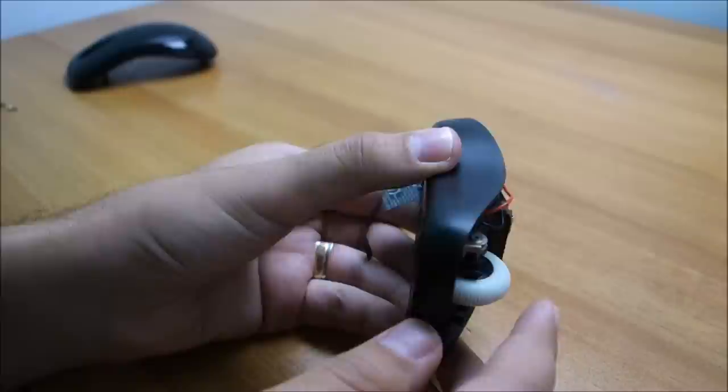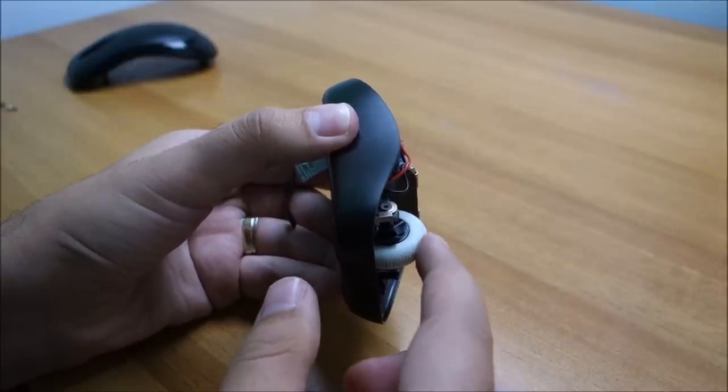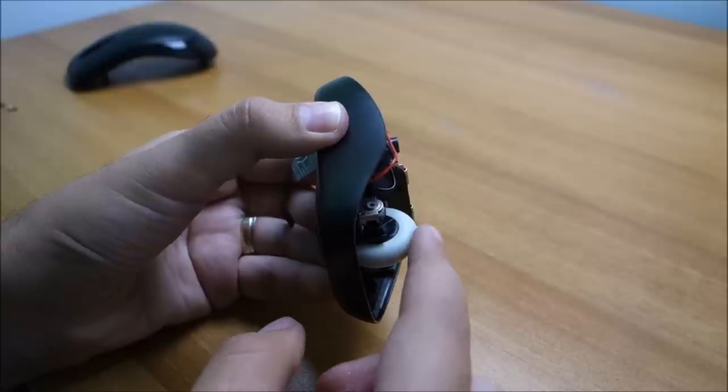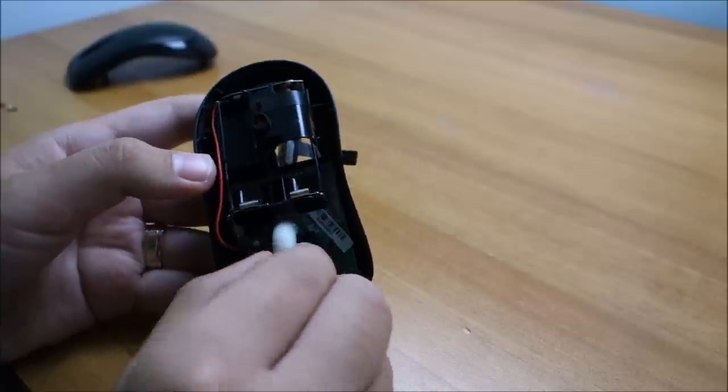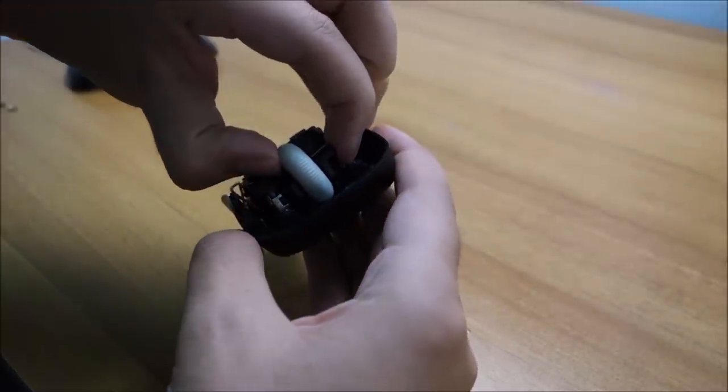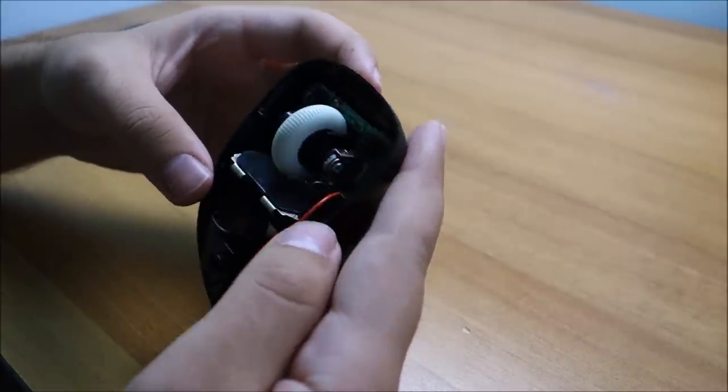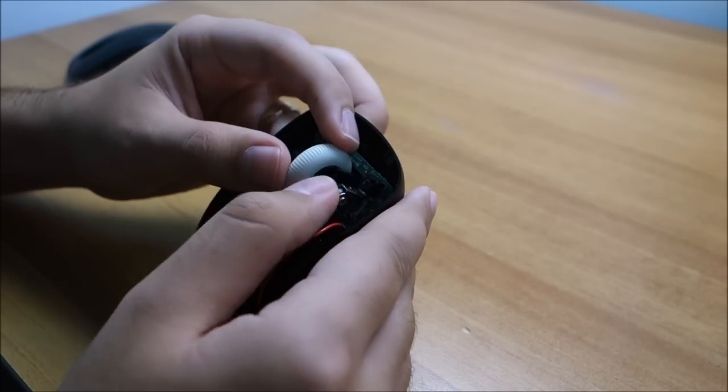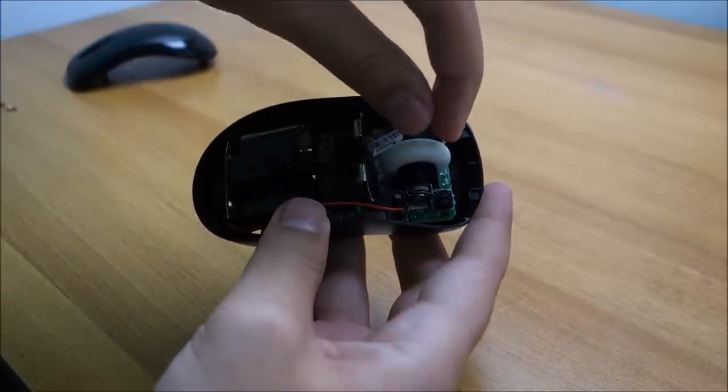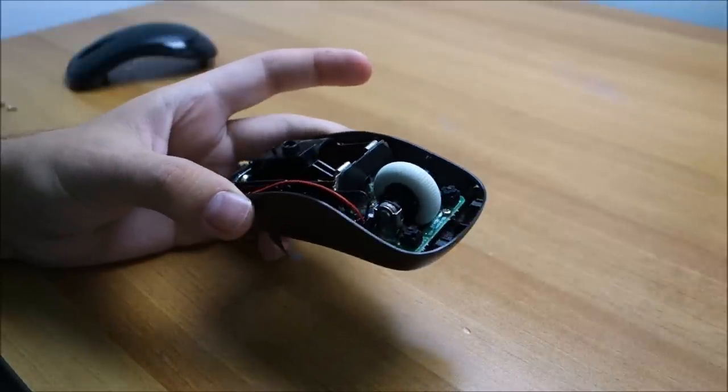I don't know how obvious this is on the camera, but the outside of the wheel spins and the inside remains in position. So I must take this off. But the question is how?